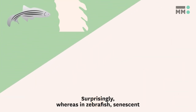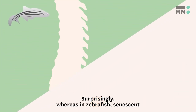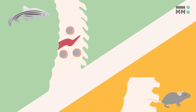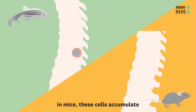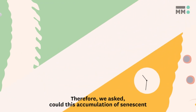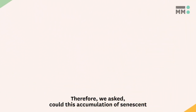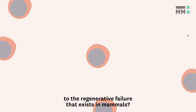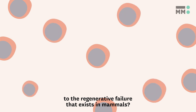Surprisingly, whereas in zebrafish senescent cells are temporarily induced at the periphery of the lesion, in mice these cells accumulate and persist over time. Therefore, we asked: could this accumulation of senescent cells be one of the factors that contributes to the regenerative failure that exists in mammals?